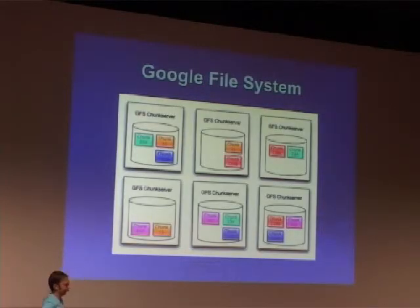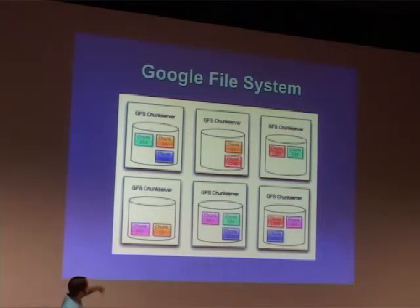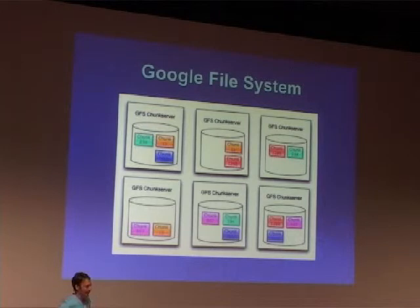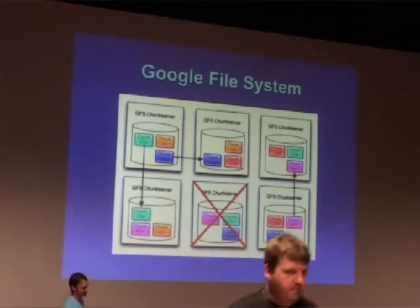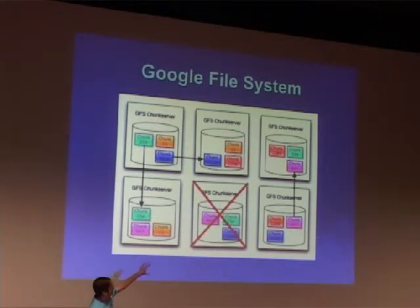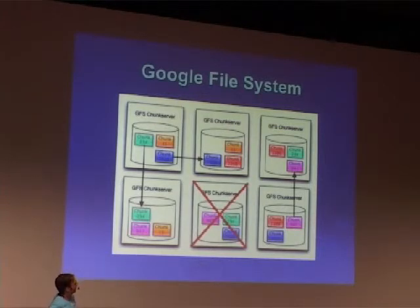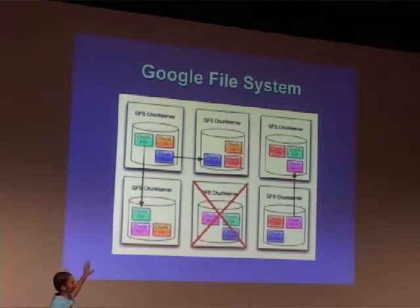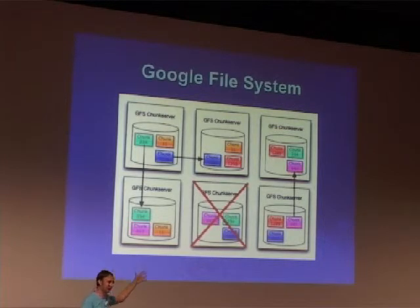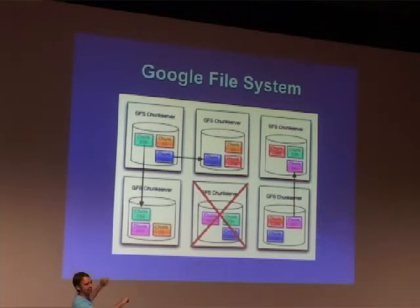This illustrates how machine failures work in the Google File System. We've got six chunk servers; these colored boxes represent chunks. When a machine goes down, the chunks it was managing get replicated by other machines in the system. The nice thing is that you have multiple machines handling failover — you don't have a single machine that has to be put in its place and have the data copied. The data will automatically get replicated on the spare capacity in all the other machines.